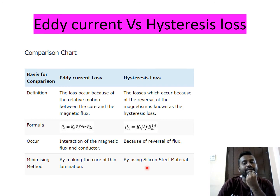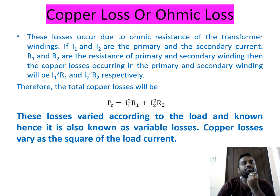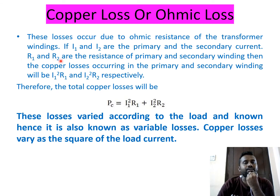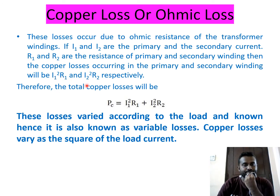Copper or ohmic losses occur due to the ohmic resistance of the transformer windings. I1 and I2 are the primary and secondary currents; R1 and R2 are the resistances of the primary and secondary windings. The copper losses in the primary are I1²R1 and in the secondary are I2²R2, so total copper losses equal I1²R1 + I2²R2.